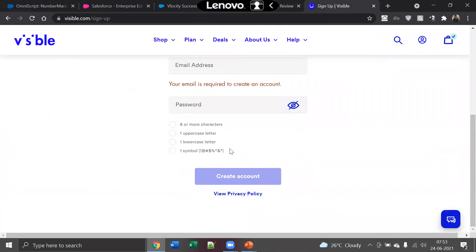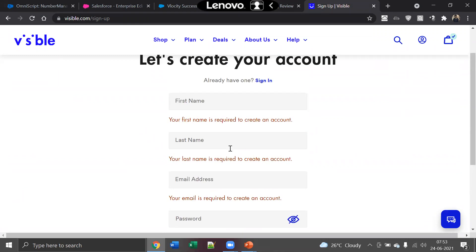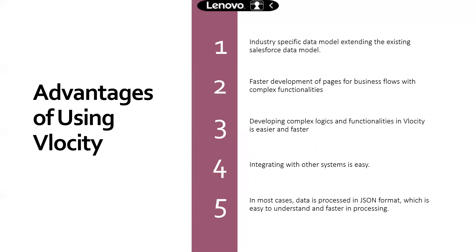With the number of products I choose created as order line items for that order, we are using the existing standard data model. We also have things like promo codes, referral codes, promotions applied, or discounts — and to make sure these extra features fit into the telecom domain, Velocity has created certain other objects and relationships. Next, development becomes very fast. You can build complex business logics and complex functionalities in a very fast way — I will discuss about why that becomes faster going ahead.